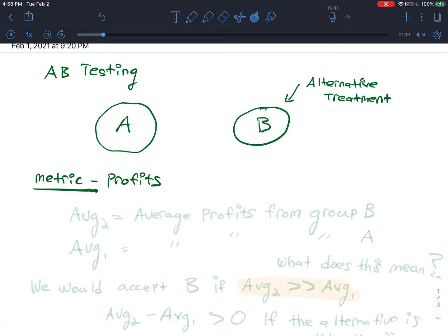Just kind of offhandedly, what our hope here is we would expect, if we believe that the alternative treatment is better, we would expect that the average profits from group B are much greater than the average profits from group A. So let's say average 2 equals the average profits from group B, and similarly, average 1 is equal to the average profits from group A.